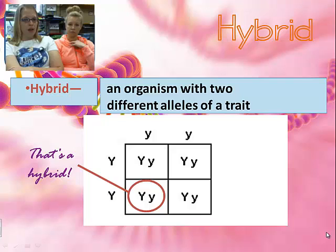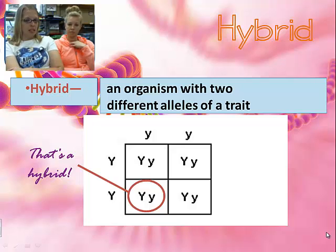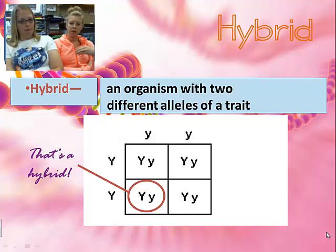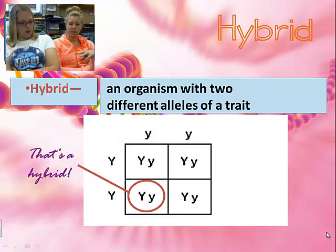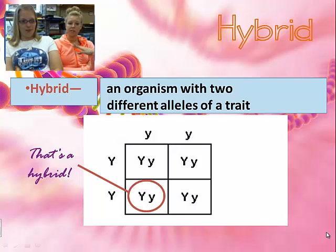The official definition of hybrid is an organism with two different alleles of a trait — one capital letter and one lowercase letter. If you're wondering how you figure out those combinations, that's what a Punnett square is. You're going to learn how to do Punnett squares and practice with them. This is something you'll become very familiar with, and it's easy — so don't get overwhelmed.